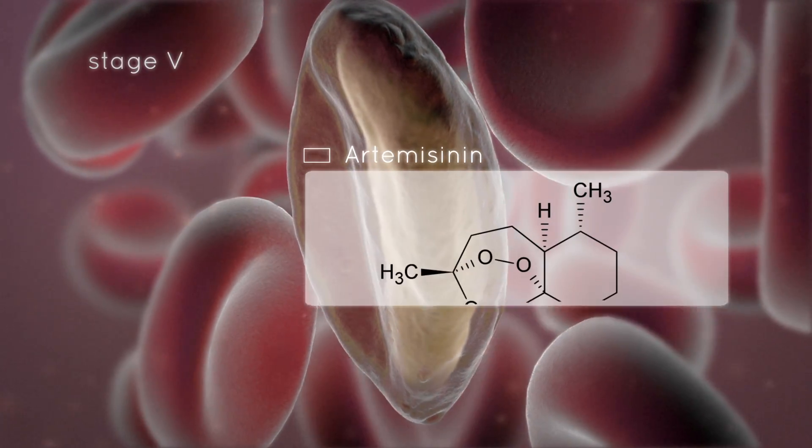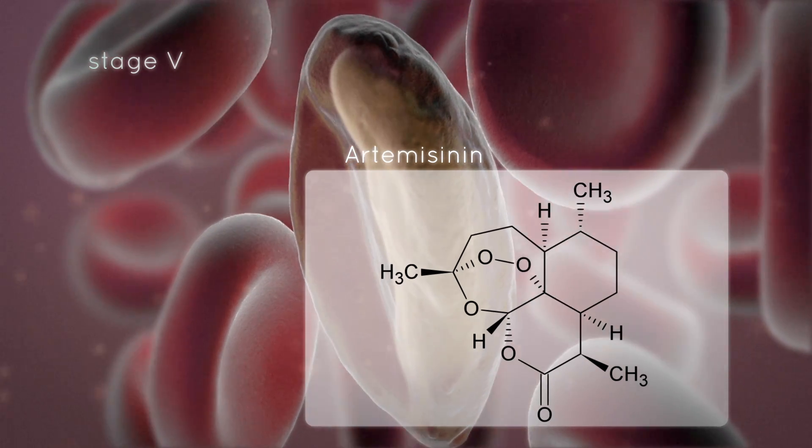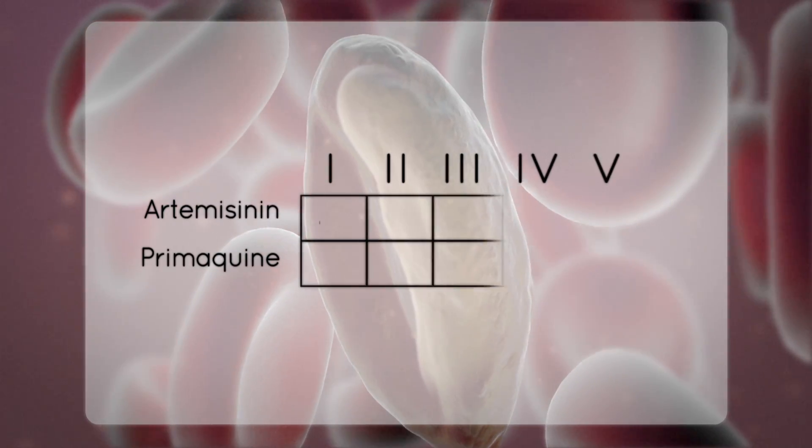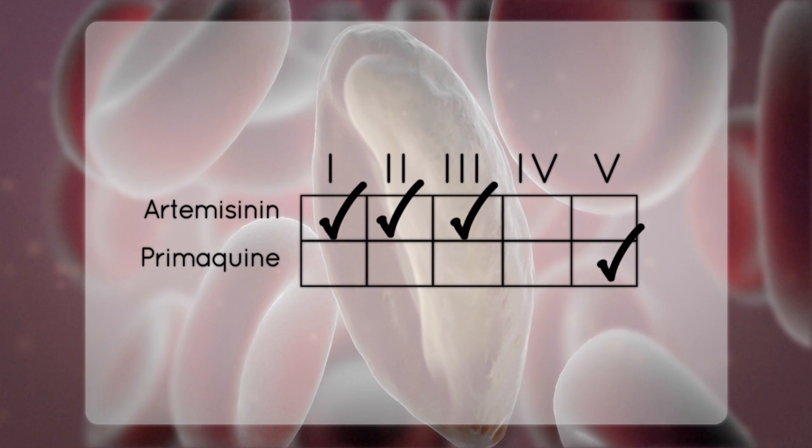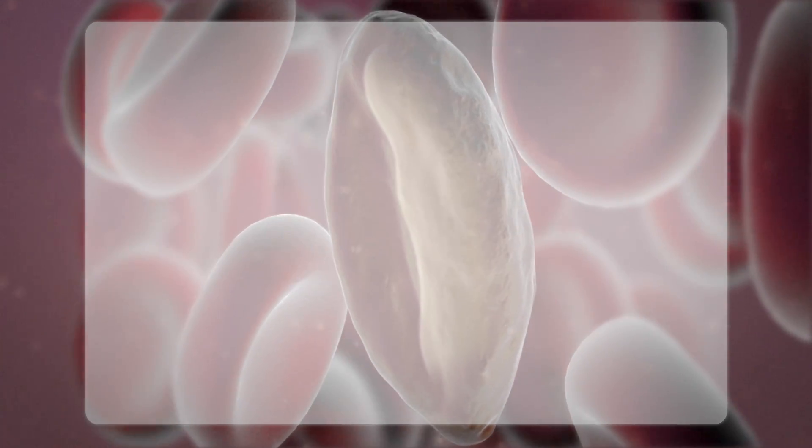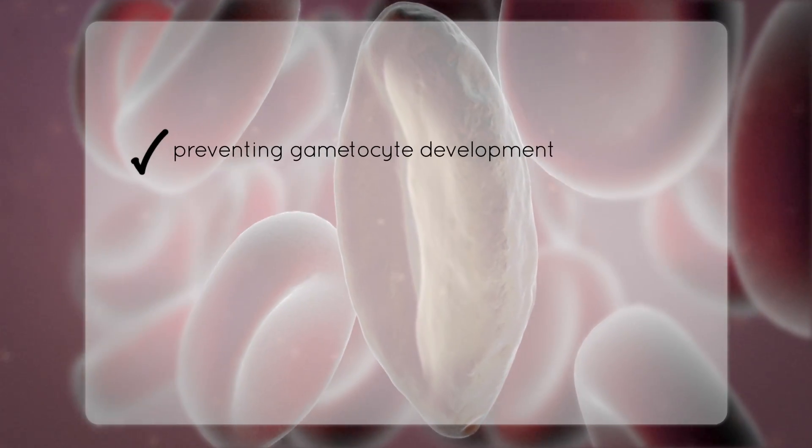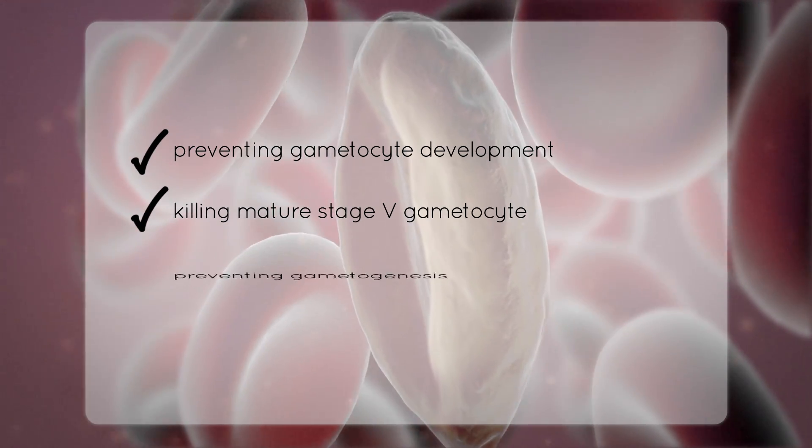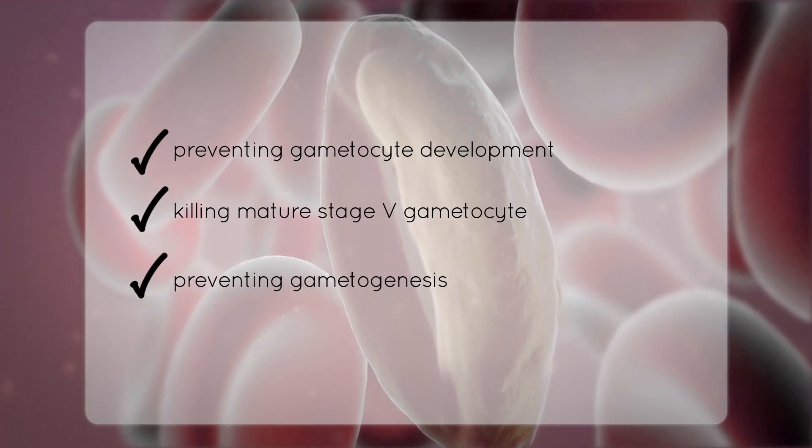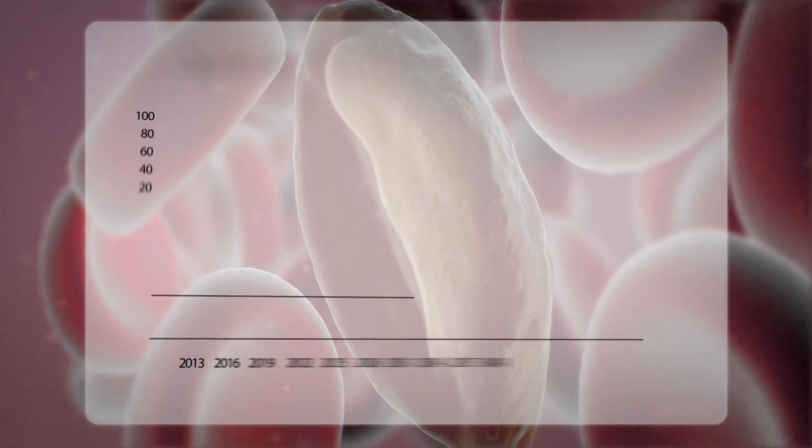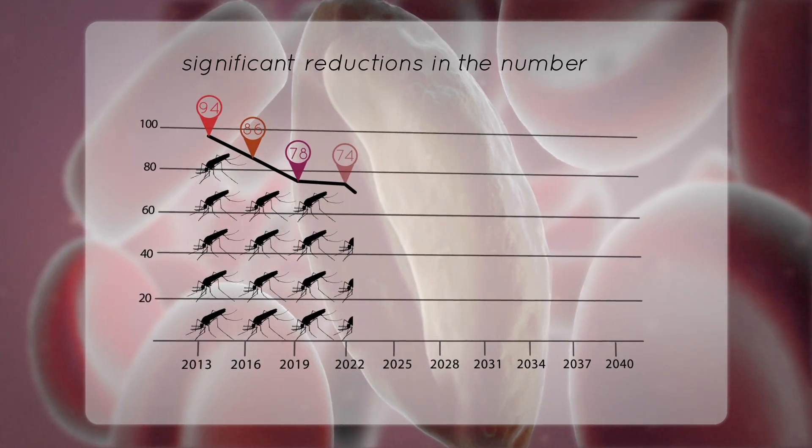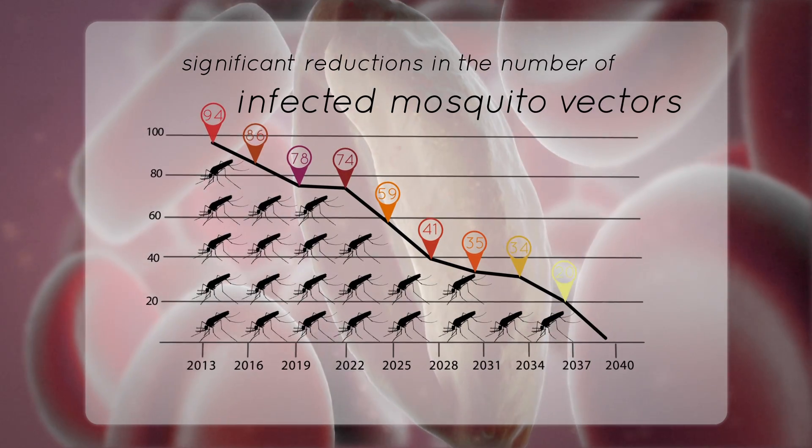Artemisinin is an effective antimalarial, but activity is limited to asexuals and stage 1 through 3 gametocytes. Discovery of new drugs that are focused on preventing gametocyte development, killing mature stage 5s in humans, or preventing gametogenesis and fertilization in the mosquito could result in significant reductions in the number of infected mosquito vectors.